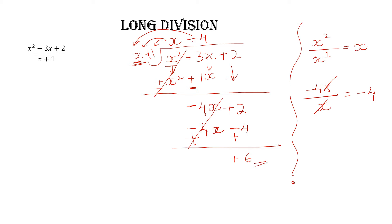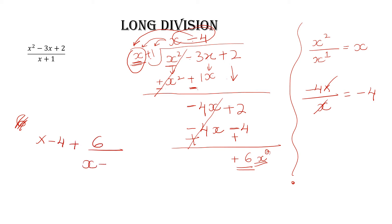Here you don't have any x term, or you can say the x has a 0 power. You stop doing the division when the degree of the remainder is less than the degree of the divisor. So write the quotient first — that means x-4 — then write the remainder divided by the divisor, which is 6 over (x+1). This is how we perform the division and write the final answer.